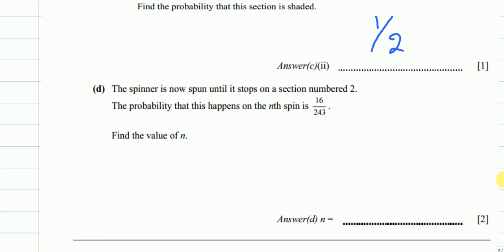Now let's go to part D. The spinner is now spun until it stops on a section numbered 2. The probability that this happens on the Nth spin is 16/243. Find the value of N. What they are saying is they will keep spinning until they get a 2. We need to figure out which spin gave that probability. If we got 2 on the first, second, or some later chance, we find which spin produces the probability 16/243.